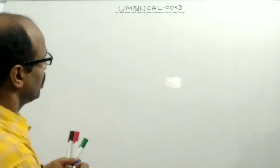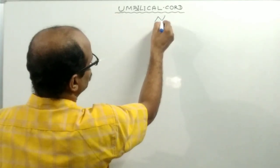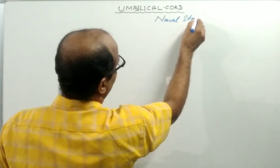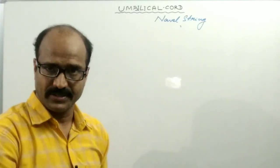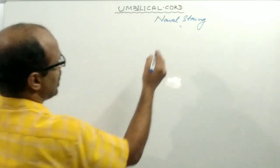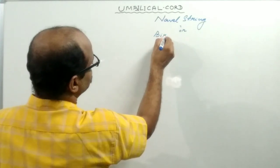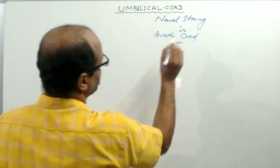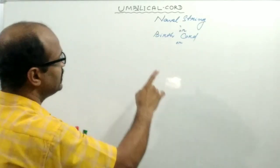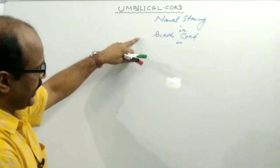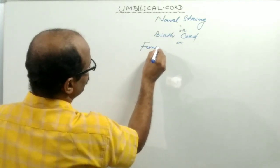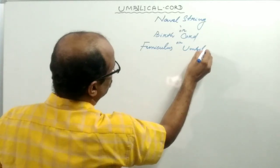Welcome to another session. In this session I will talk about what is the umbilical cord, what is the meaning of umbilical cord, and what is the function of umbilical cord. It is not necessary for higher secondary students but a little bit of idea should be there. The umbilical cord is also known as the navel string, because it is attached with the navel of the fetus. It is also known as the birth cord, because the newly born baby is connected with the mother through such a cord. It is also known as funiculus umbilicalis.